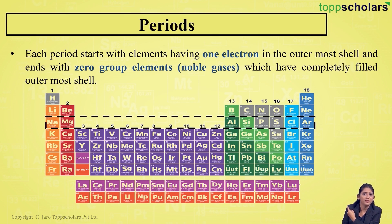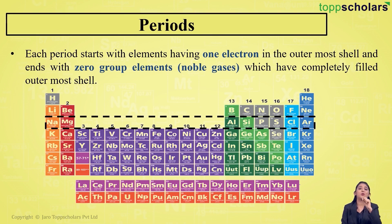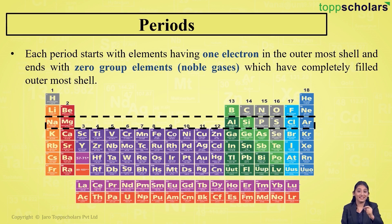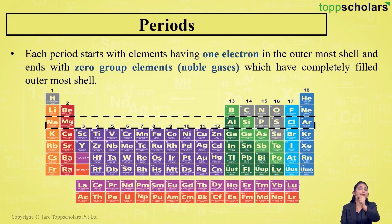Period number three has sodium as its first element, which has one electron in its outermost shell. It ends with argon, which is a noble gas with a completely filled outermost shell. Period number two starts with lithium, which has one electron in the outermost shell, and ends with neon, an inert gas with a completely filled outermost shell.